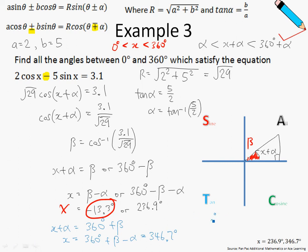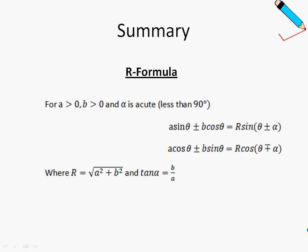Therefore the final answers for x will be 236.9 degrees or 346.7 degrees, to one decimal place. This is the most difficult of all the examples so far. And we've come to the end of the video on the R formula.